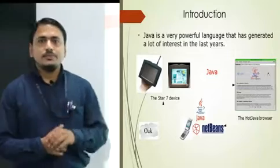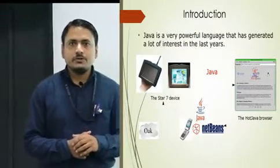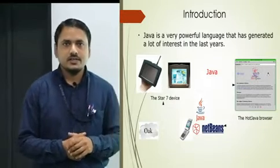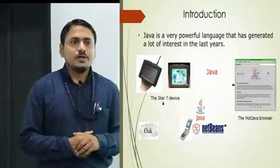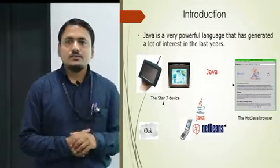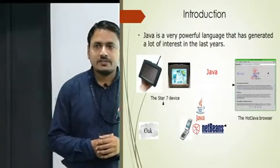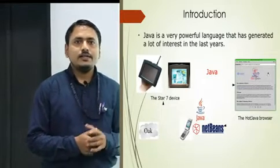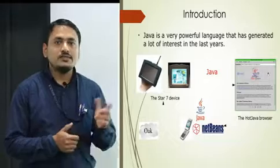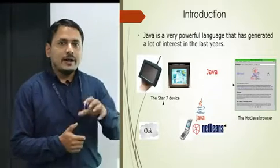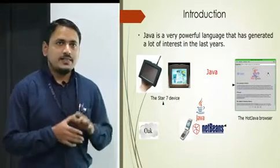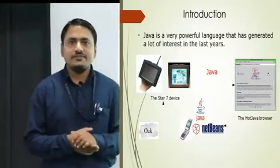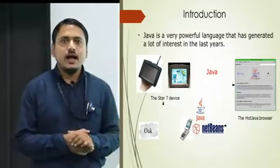Now we can discuss what is the real concept of Java. Java is a pure object oriented programming language, otherwise we can say it is a general purpose object oriented programming language. But C++ is also a type of object oriented programming language, but it is a partial object oriented programming language. Java was originally known as Oak, it was discovered by James Gosling, and the main purpose of Java was to design software specifically implemented in electronic devices like VCR, TV, refrigerator, AC and other gadgets.